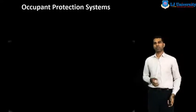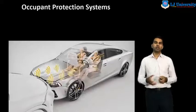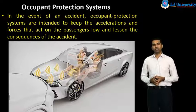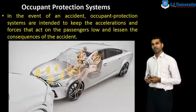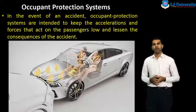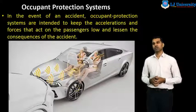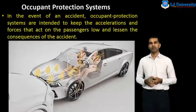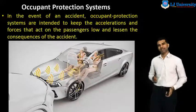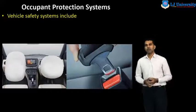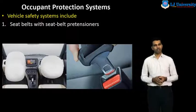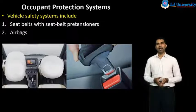Now the third system is the occupant protection system. Here we will discuss about the safety systems that are available in the car. In the event of an accident, occupant protection systems are intended to keep the acceleration and forces that act on the passenger low and lessen the consequences of the accident. The vehicle safety system includes, first, the seat belt with the seat belt pretensioner, and second, the airbags.